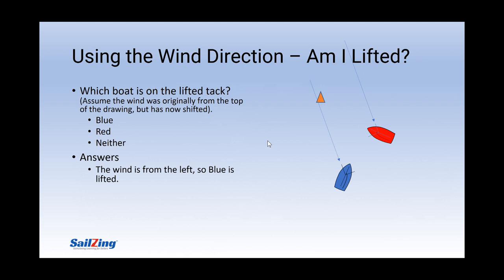Blue is on port tack, so blue is lifted. Red is on starboard and is sailing a header. Red looks like she is pointing closer to the mark, but wind direction and not mark placement determines the lifted tack. Now you may not always want to sail the lifted tack when you're near the mark, but you should at least be able to tell whether you are lifted or not, and not get deceived by just looking at the mark.